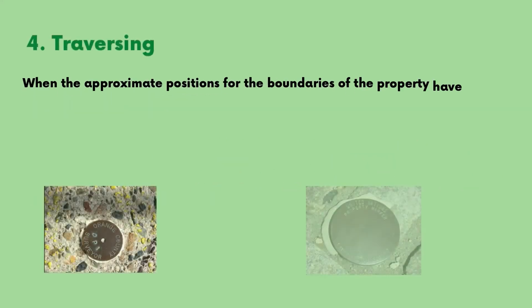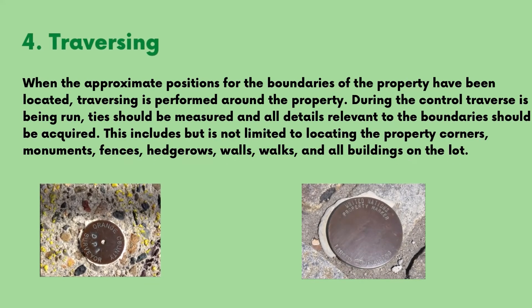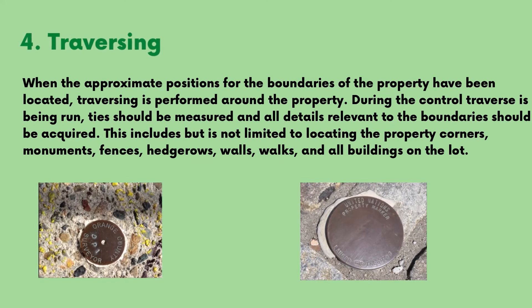Stage 4: Traversing. When the approximate positions for the boundaries of the property have been located, traversing is performed around the property. During the control traverse, ties should be measured and all details relevant to the boundaries should be acquired. This includes, but is not limited to, locating the property corners, monuments, fences, hedge rows, and walls.